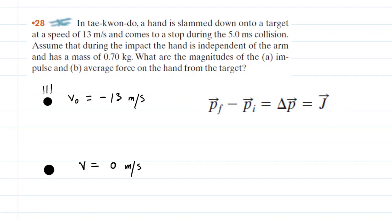We've drawn a picture of the described scenario. We have a hand being slammed downward. Notice that we've called the initial velocity negative 13 meters per second because we are assuming the downward direction is negative. And then the hand comes to rest, so its final velocity is 0 meters per second. In addition, we have the mass of the hand.